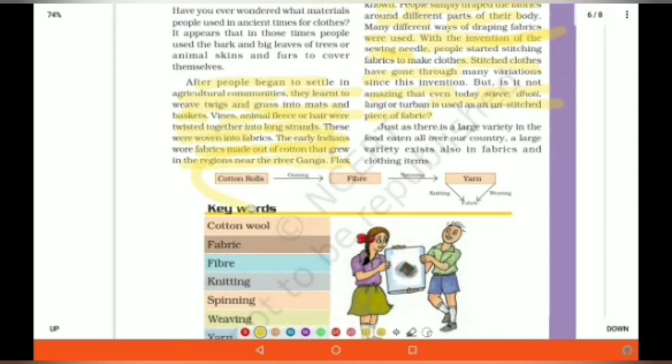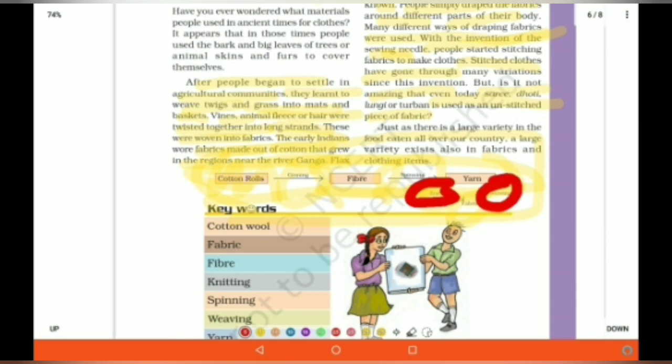This is a simple step or simple process by which cotton rolls to make cotton fabric. From cotton rolls, ginning process is done which becomes fiber. From fiber, spinning process is done and it becomes a yarn. Fabric can be obtained with either knitting or weaving.